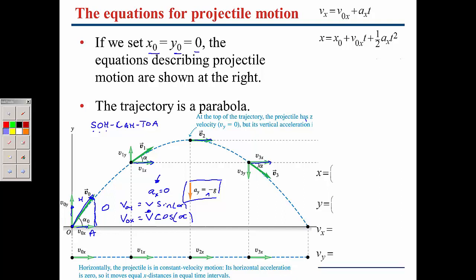However, in the y-direction there is an acceleration, so the y-velocity is initially upwards and gets smaller and smaller. At the very top, it's not moving upwards anymore — the velocity in the y-direction at that point is equal to zero. This is very important if you're solving for height or time at this point. Then the ball acts like a falling ball and increases in velocity.